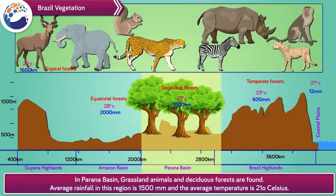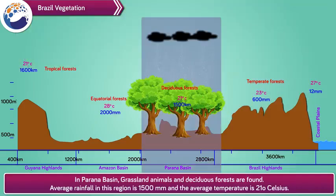In the Parana Basin, grassland animals and deciduous forests are found. The average rainfall in this region is 1500 mm and the average temperature is 21 degrees Celsius.